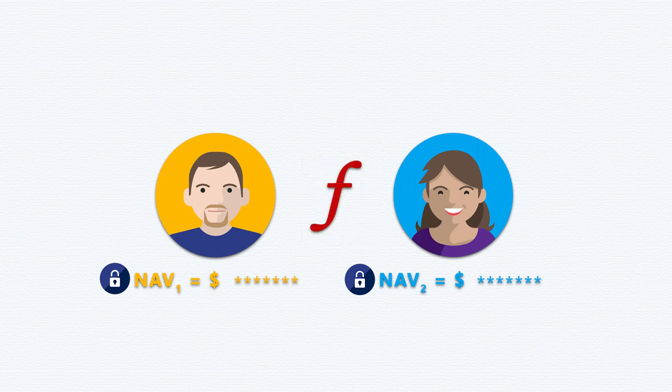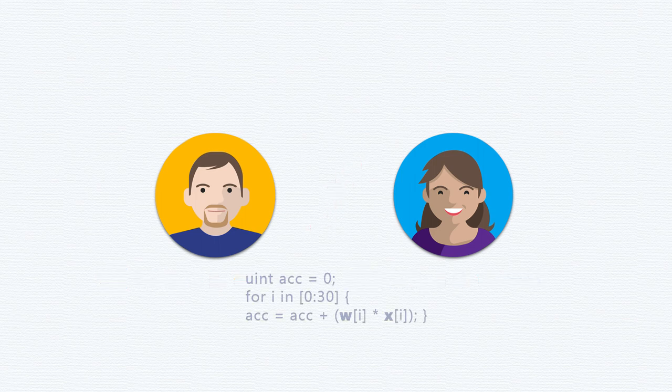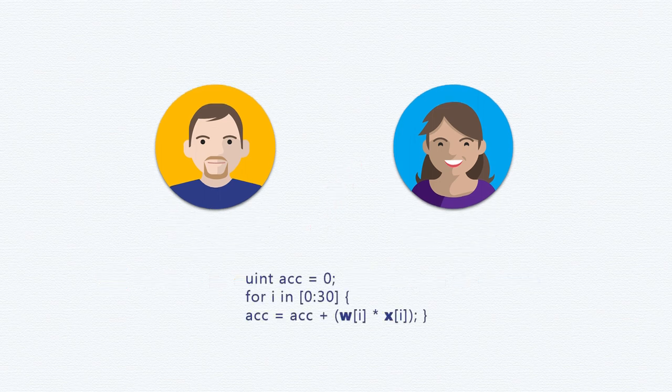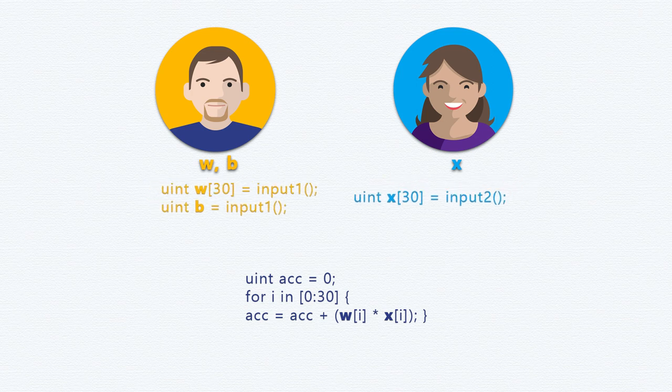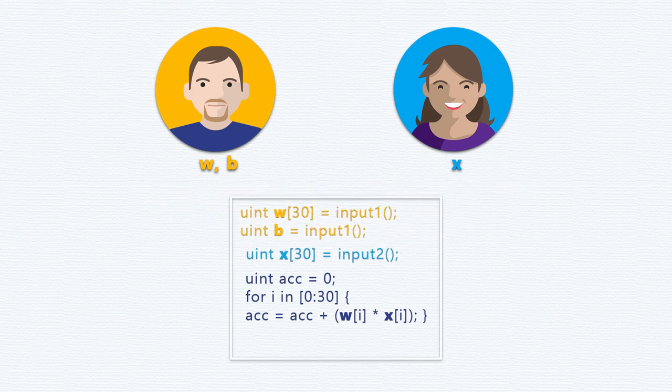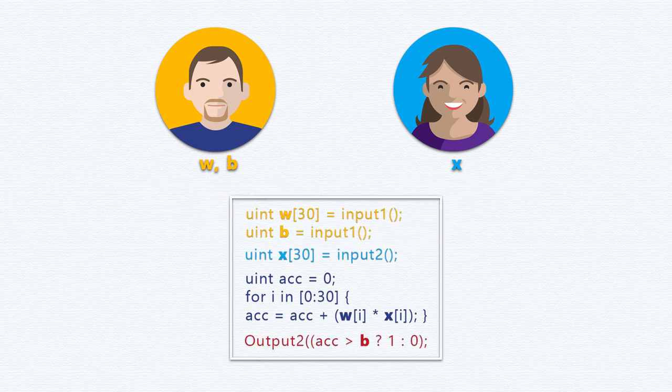Is this the only function we can compute? No — you can think of any function that you want to compute on private inputs, and we can exchange information and compute just the output of that function.